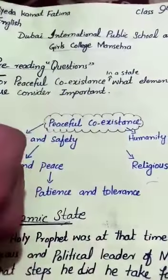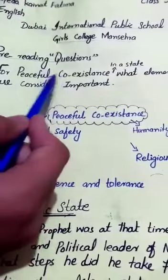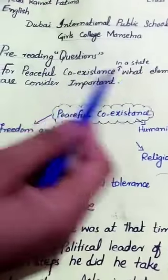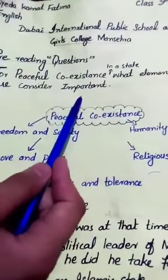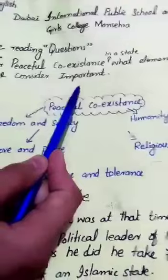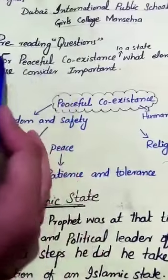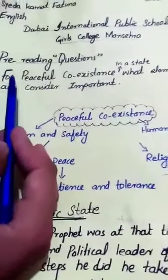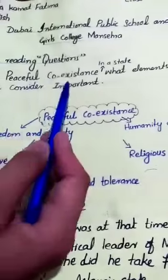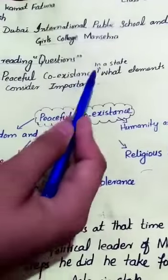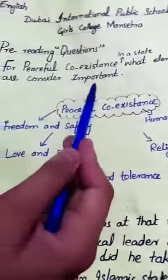Students, do you ever thought that for a peaceful coexistence in a state, what elements are considered important? I am again repeating my question: for a peaceful coexistence in a state, what elements are considered important?